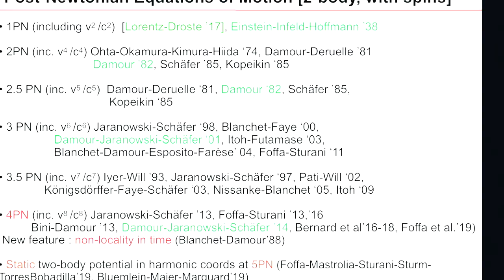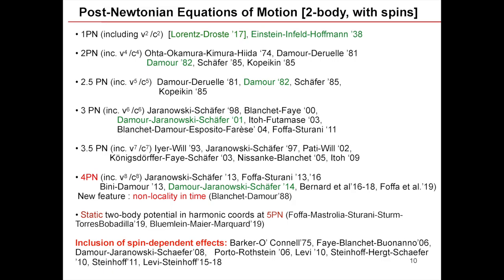By the way, there are also infrared divergences that have been understood at four loops, but I will not enter into that. At the end of the day — or at least at the end of 20 years of work — you get equations of motion and a Hamiltonian. I won't discuss here how you introduce radiation reaction for simplicity, so let me discuss the conservative part of the dynamics, the part due to time-symmetric interaction between two massive bodies.